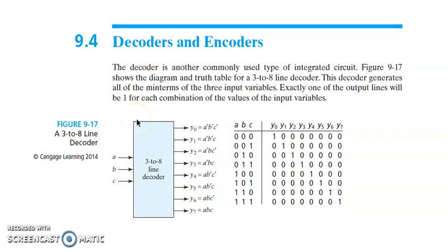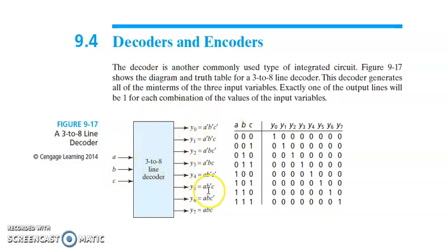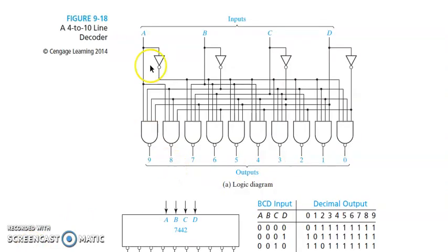With 2 inputs, the decoder produces 4 discrete states or 4 different outputs. Now we will look into the 4-to-10 decoder circuit and then move on to encoders. This is the circuit of the 4-to-10 decoder.